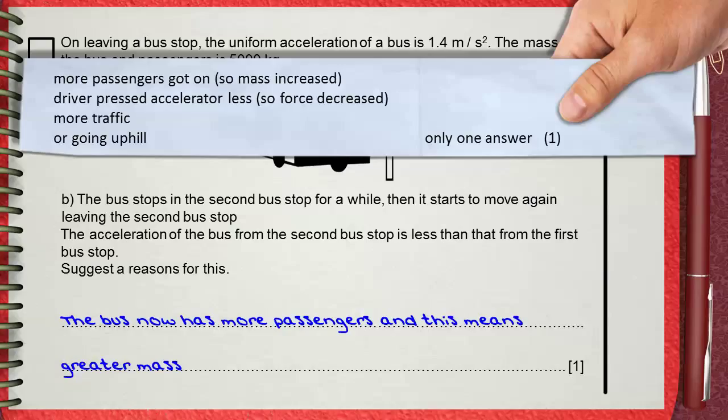Using your imagination, you can say that there are more traffic after the second bus stop. You can also think about that the bus is going uphill after the second bus stop. Any one of these ideas or any other idea that can give a correct explanation will give the one mark for the answer of the question.